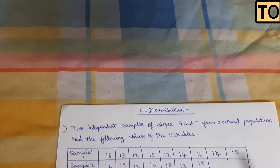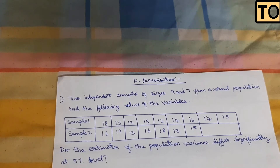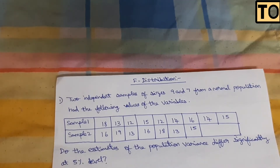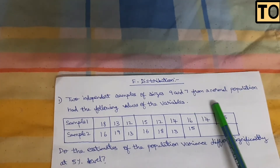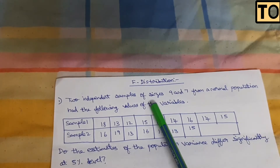This is the second type of problem. If you look at the problem, you will see that you have two independent samples of size — nine and seven — from a normal population.